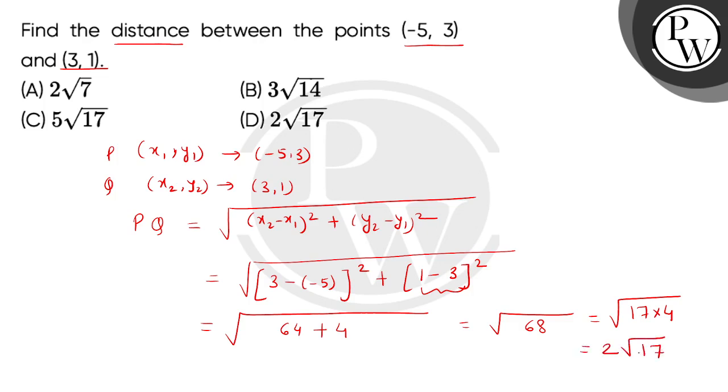And root 17 is an irrational number. So kids, the correct answer is option D. Thank you.